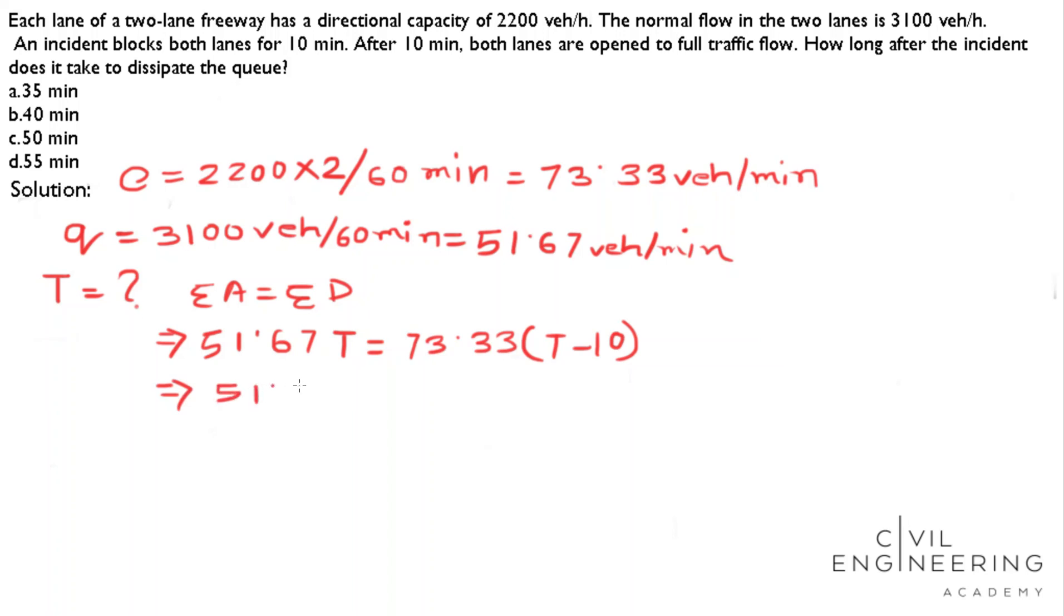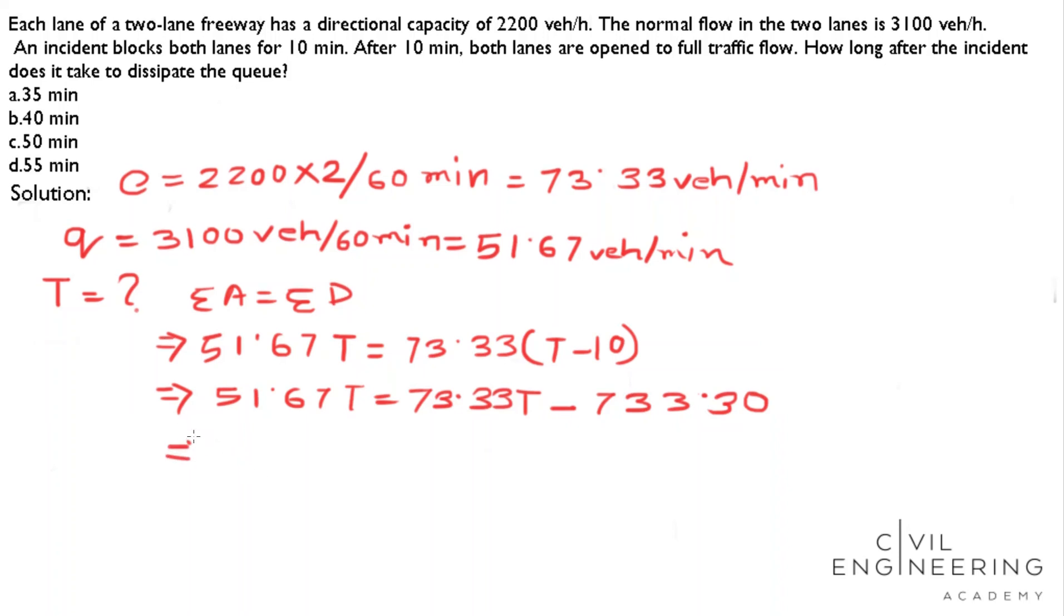Here is 51.67T equals 73.33T minus, after multiplying 73.33 by 10, it is 733.30. So T equals 733.30 divided by 73.33 minus 51.67.